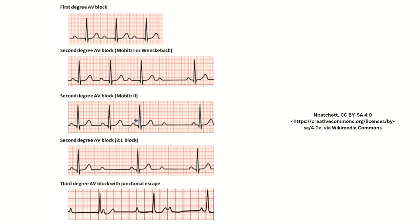With second degree type 2, what happens is that randomly a QRS does not follow a P wave. So it looks normal, normal, normal, normal, and then boom — no QRS follows the P wave. To summarize: second degree type 1 has the PR interval getting progressively bigger until it doesn't lead into a ventricular contraction; second degree type 2 has a QRS dropped randomly without warning.